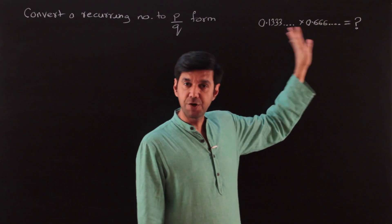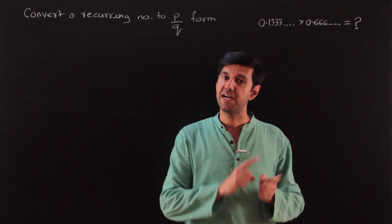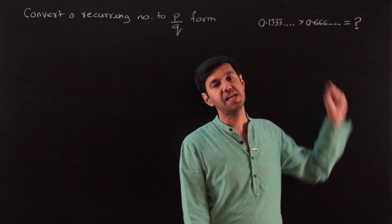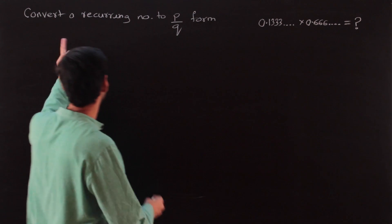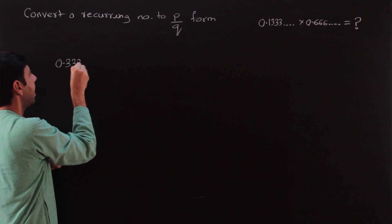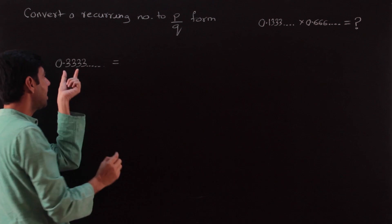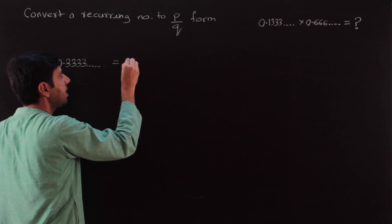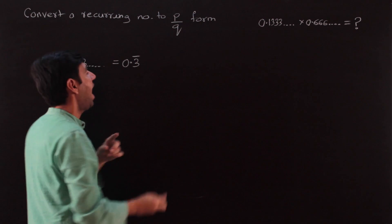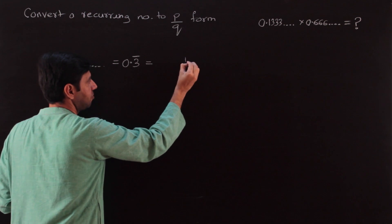The accurate way to do this is to convert the recurring number to a p/q form. Every recurring number is rational, and because it's rational it can be expressed as p/q — that is what we are going to learn right now. We start with the commonly encountered number 0.333333..., which we represent as 0.3̄ (0.3 bar), putting a bar over the part which recurs. This number is nothing but 1/3.